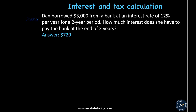Practice problem: Dan borrowed $3,000 from a bank at an interest rate of 12 percent per year for 2 years. How much interest does she have to pay the bank at the end of two years? Use the same I = PRT formula — you should get $720.